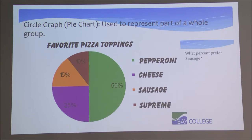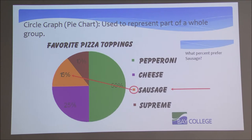From this chart, we can ask: what percent of those who answered prefer sausage? We look at the key and find sausage, which is illustrated with an orange square. That portion of the pie sharing that color represents people who prefer sausage. Going to the chart, we can see that orange represents 15%. So 15% of the people liked sausage as their favorite pizza topping. That is the basics of a pie chart, otherwise known as a circle graph.